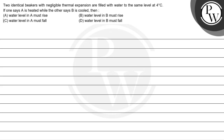Hello! Let's read out the question. Two identical beakers with negligible thermal expansion are filled with water to the same level at 4 degrees Celsius. If one beaker A is heated while the other beaker B is cooled, then we have to choose the correct option out of the given four.